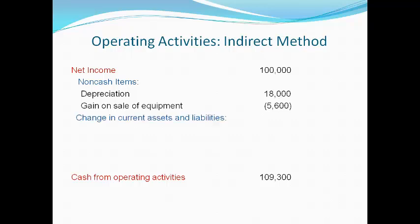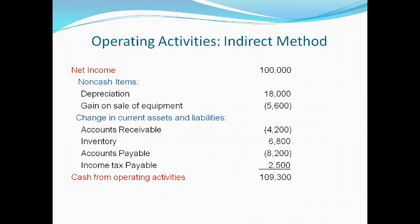A change in a current asset or current liability account is reported because these accounts represent revenues and expenses not included in net income and not received or paid in the current period. Net income is adjusted for the change in all current assets and current liabilities except cash. Accounts receivable occurs when sales are collected in a different period than the sale occurs. Accounts payable occurs because expenses were incurred and paid in a different period. Expenses also occur when an asset paid for in a previous period is used up in the current period. All items listed between net income and cash generated from operating activities represent differences between net income and cash for the period.